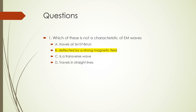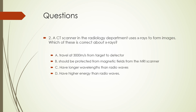Next question: a CT scanner in the radiology department uses x-rays to form images. Which of these is correct about x-rays? A: travel at 3000 meters per second from target to detector. B: should be protected from magnetic fields from the MRI scanner. C: have longer wavelengths than radio waves. D: have higher energy than radio waves. The correct answer is D, have higher energy than radio waves.